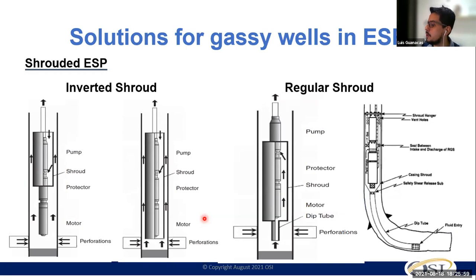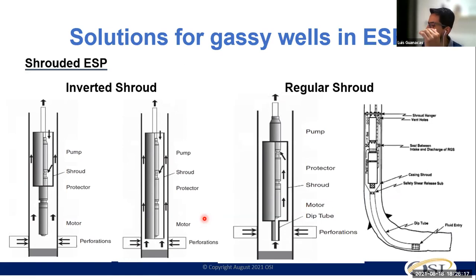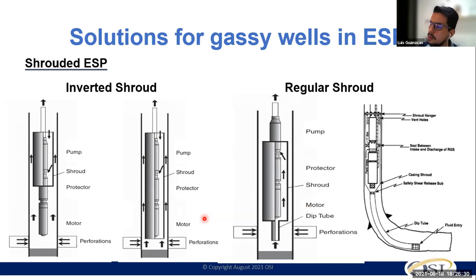There are also measures within the pump design itself. There are specific types of pump stages and specific pumps that can handle or manage gas production. They work by changing the spaces between pump stages, increasing pressure there, and reducing free gas. Those concepts are also available in the oil industry market and can be used to prevent gas issues in your pump.